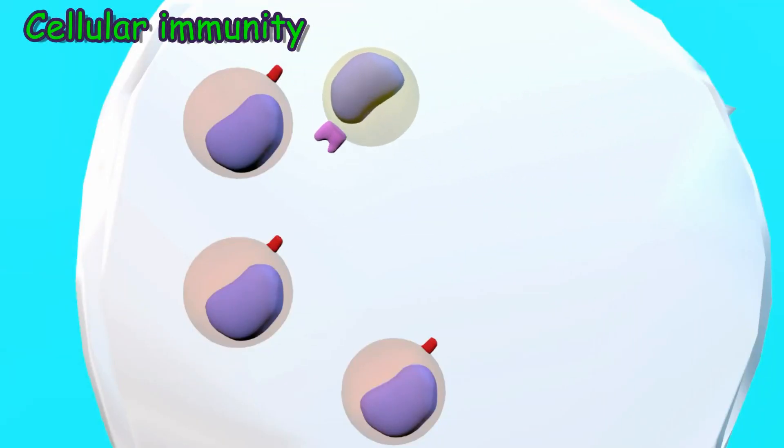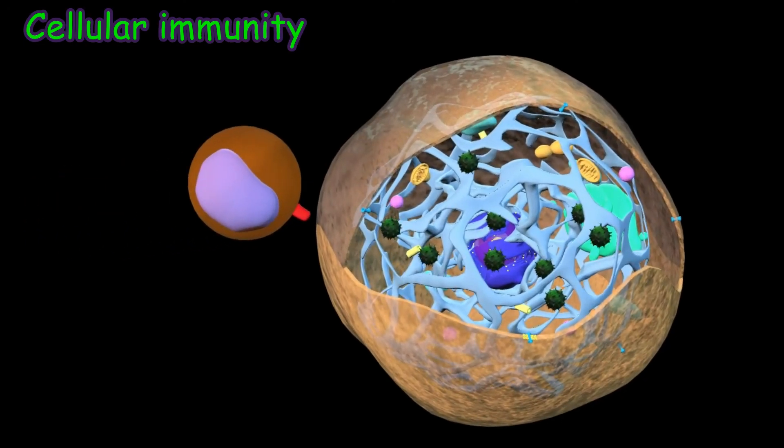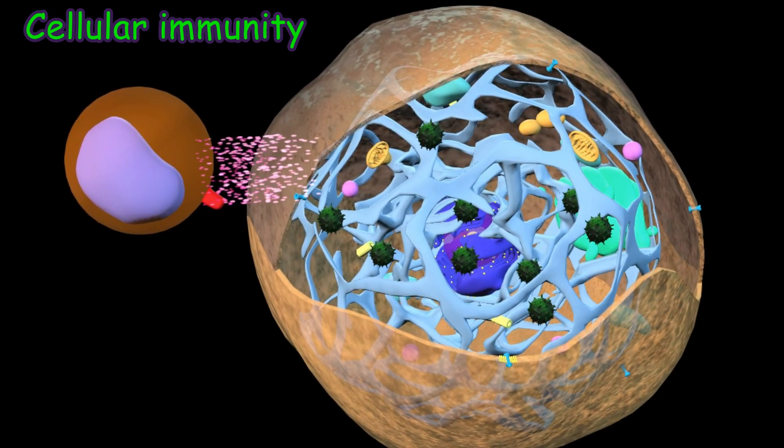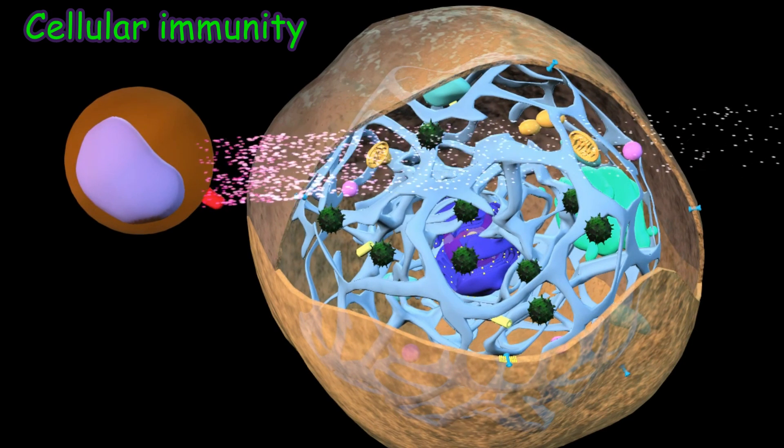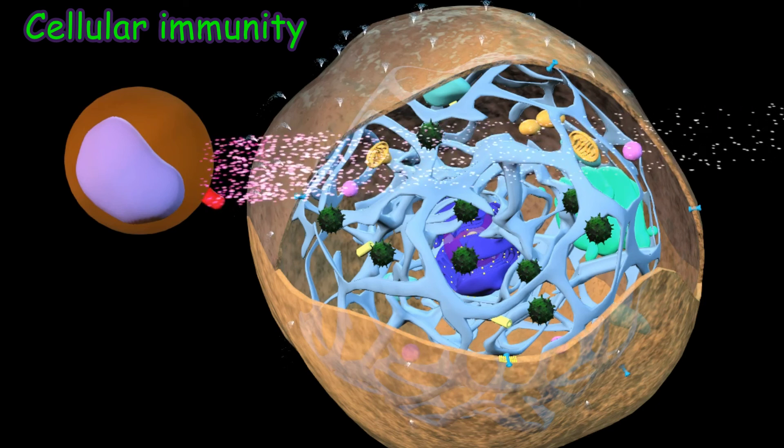The activated T helper cells activate cytotoxic T cells. Cytotoxic T cells identify the cells infected with specific viruses. They secrete perforin enzyme, which causes perforations in the cell wall, leading to its death.